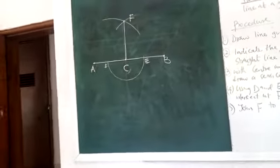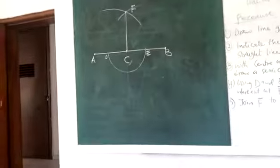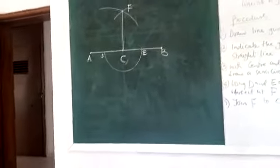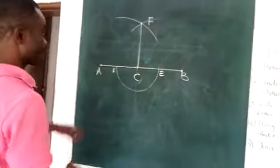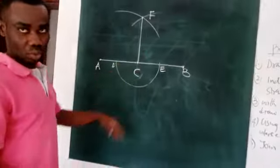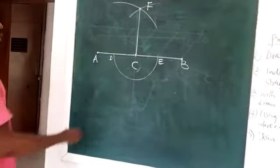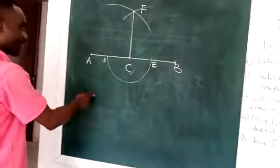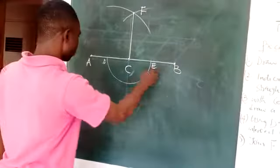So that is how to draw a perpendicular bisector. Actually, not a perpendicular bisector, but a perpendicular line to a given line. We have drawn the perpendicular line CF to the given line AB.